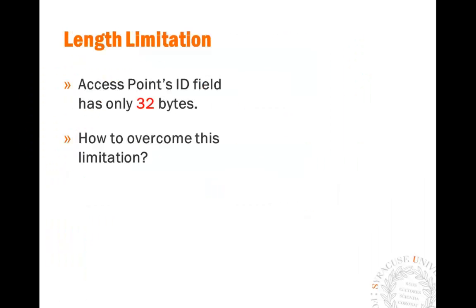We do have a challenge: the Wi-Fi access point SSID field has only 32 bytes. That is not enough to inject meaningful malicious code that can do real damage — it can do a pop-up window, but if you want to do real damage, 32 bytes is not long enough. So the question is: how can an attacker overcome this limitation?